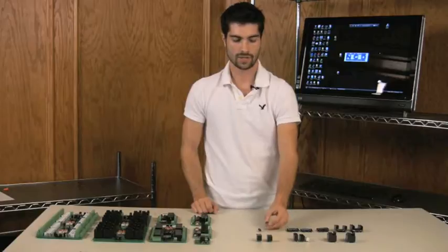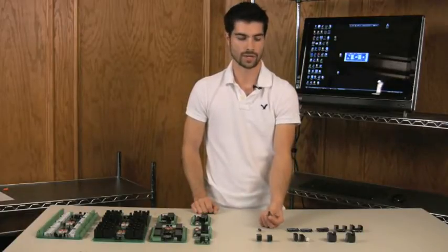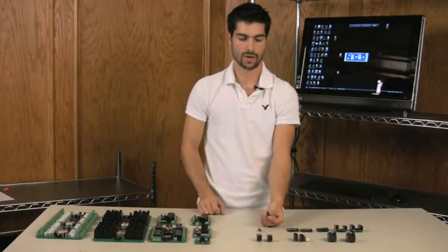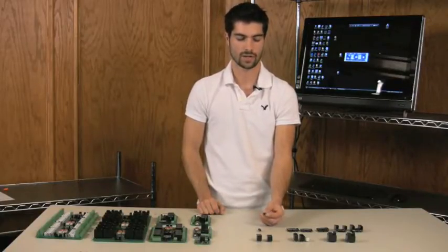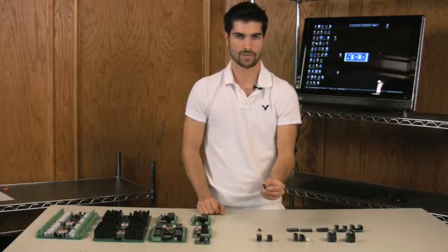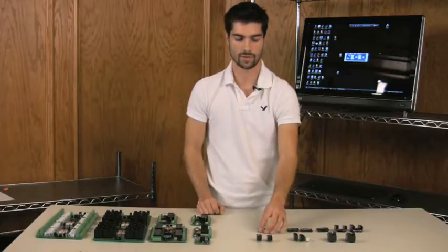We also have these little guys here. These are called reed relays. They're real small, and they're good for switching really low current lines, such as communication lines and things of that nature. They're only rated for .5 amps, so half an amp at the most is what these little guys are rated for.